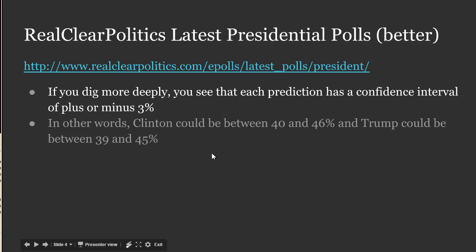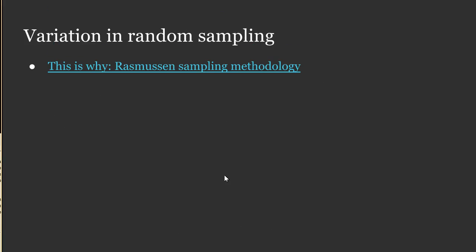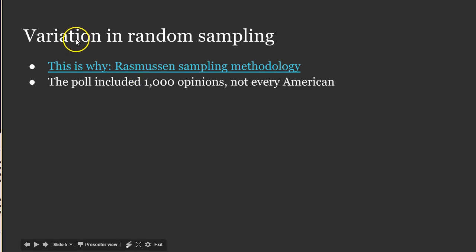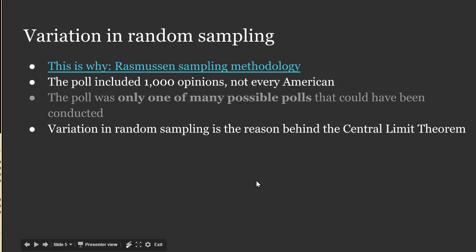Why is there this variance in the poll? Where did these numbers come from? When we do random sampling, like the kind that you get with political polls, you will have variation. This particular poll includes 1,000 opinions — not every single American. The poll itself was only one of many possible polls that could have been conducted. There are actually about 150 million registered voters, so when we talk to 1,000 of them, we could have talked to any 1,000 of them. If we did this an hour later, we could call 1,000 different people.